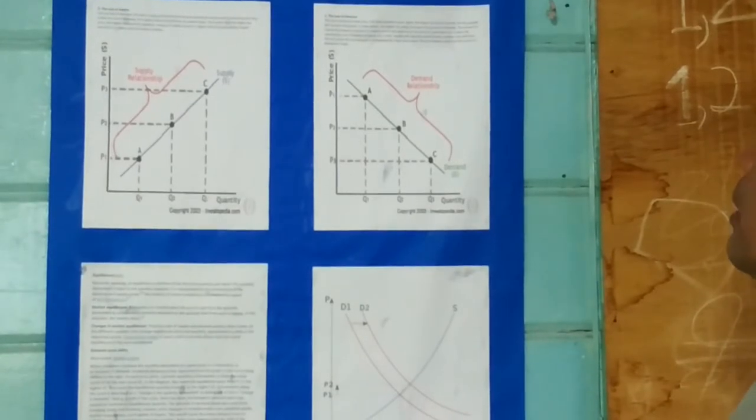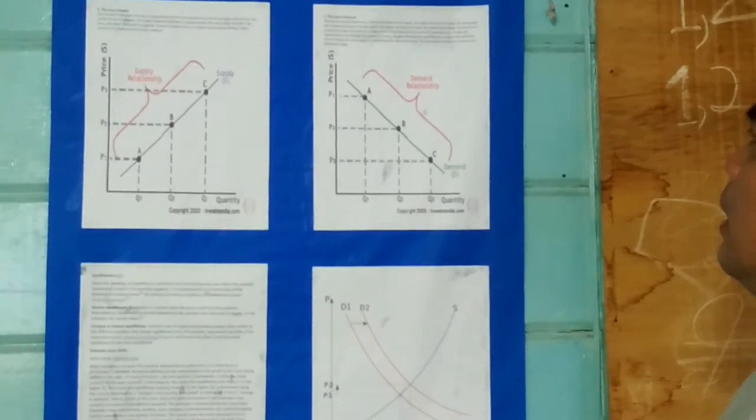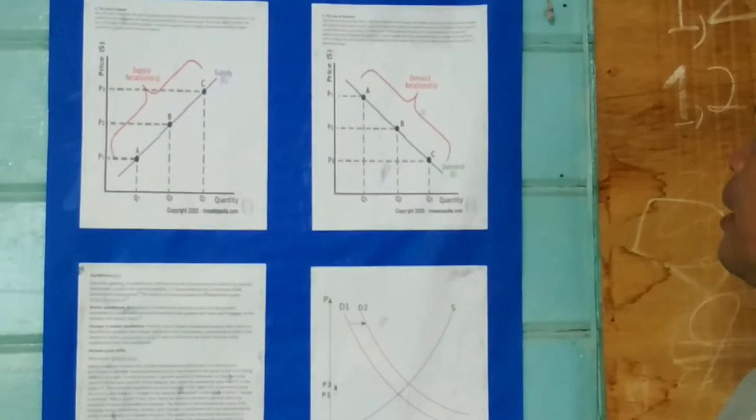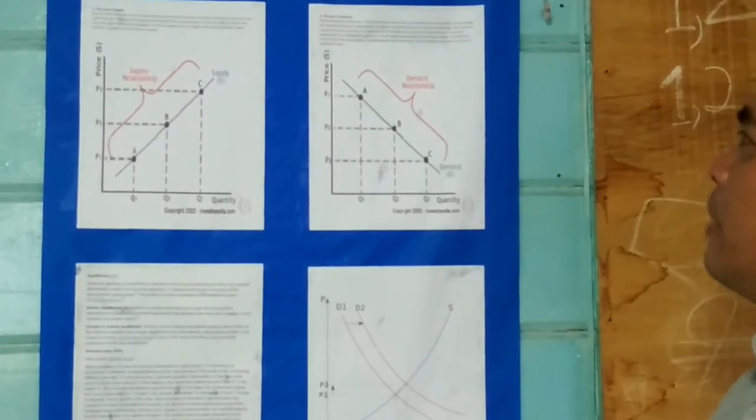So that's the opportunity cost of buying that good. As a result, people will naturally avoid buying a product that will force them to forgo the consumption of something else they value more.